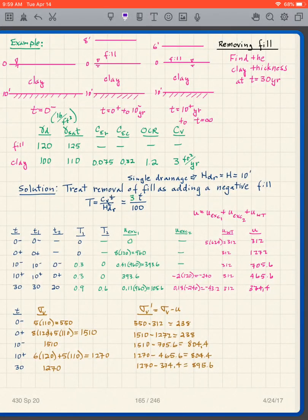We want to look at another case: removing fill. The way we're going to look at removing fill is by adding a negative fill. It's going to be very similar to the previous problem we did. We're going to set up two different time scales, and the only difference is that we're going to have a negative fill.